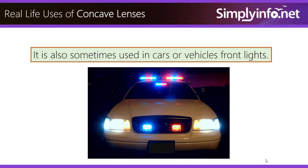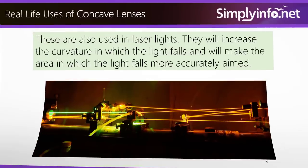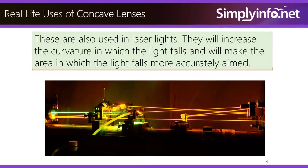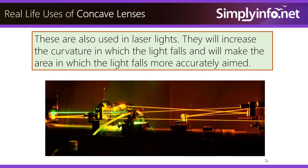Concave lenses are also sometimes used in car or vehicle front lights. They are also used in laser lights, where they increase the curvature in which the light falls and make the area in which the light falls more accurately aimed.